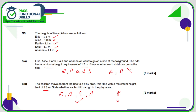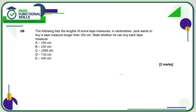From the previous question, E, P, and S can go, so Alice and Ariana can't. For question 6, Jack wants to buy a tape measure longer than 500: A is 100 — not long enough; B is 250 — not long enough; C is longer than 500 so that's okay; 750 is longer than 500 so that's okay; 400 is not okay because that's less than 500.